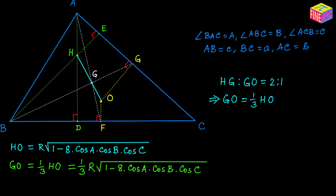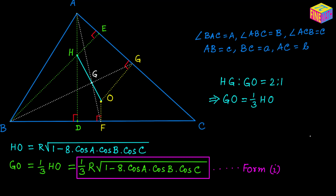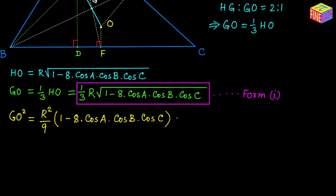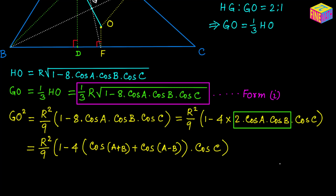Now let's convert this into another form. If we square both sides, GO squared equals R squared over 9 times (1 minus 8 times cosine A times cosine B times cosine C). We borrow a factor of 2, writing this as R squared over 9 times (1 minus 4 times (cosine A plus B plus cosine A minus B) times cosine C), using the product-to-sum identity: 2 cosA cosB = cos(A+B) + cos(A−B).